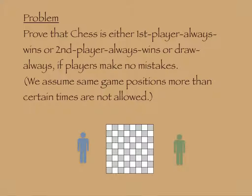Problem: Prove that chess is either first player always wins or second player always wins or draw always if players make no mistakes. We assume same game positions more than certain times are not allowed.